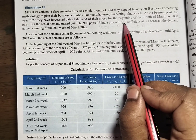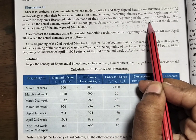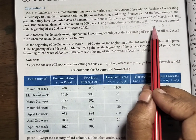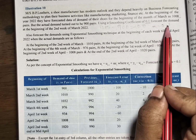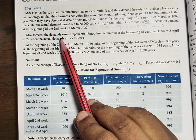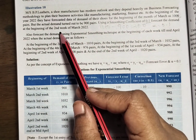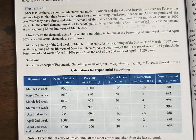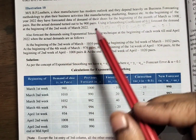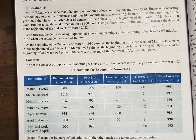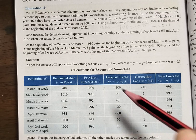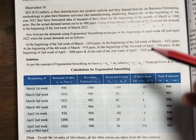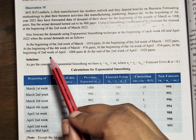Using a smoothing coefficient of 0.1 — this is called smoothing coefficient alpha — by using this smoothing coefficient alpha, we are going to forecast the demand for the next weeks, like the second week of March 2022 and onwards. That is what I am going to explain in this sum.